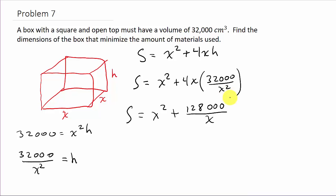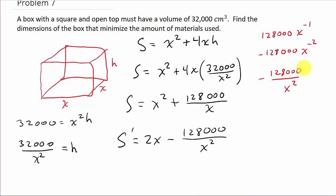Now I need to take the derivative. The derivative is 2X minus 128,000 over X squared. Remember, when we take the derivative of this - 128,000X to the negative 1 - move that exponent up, so that's negative 128,000X to the negative 2. Move that back down to the denominator.